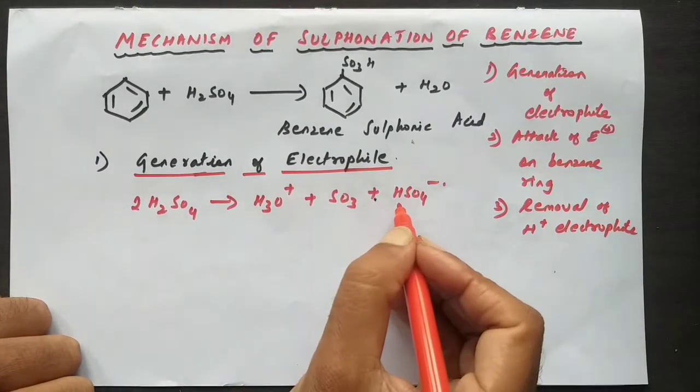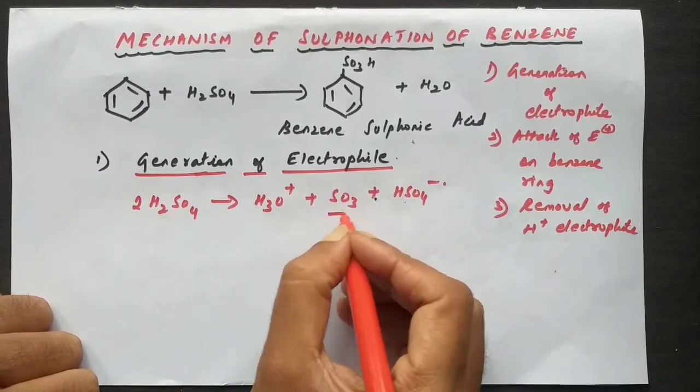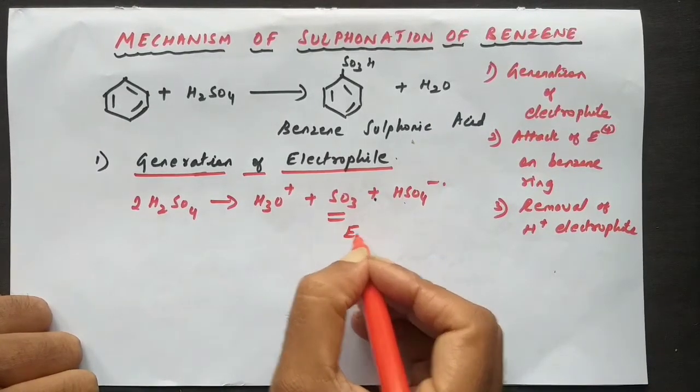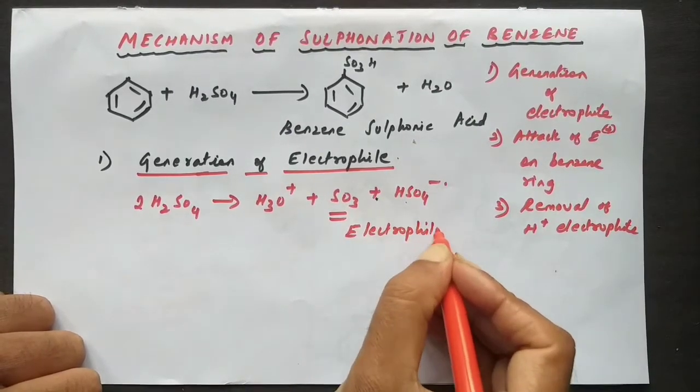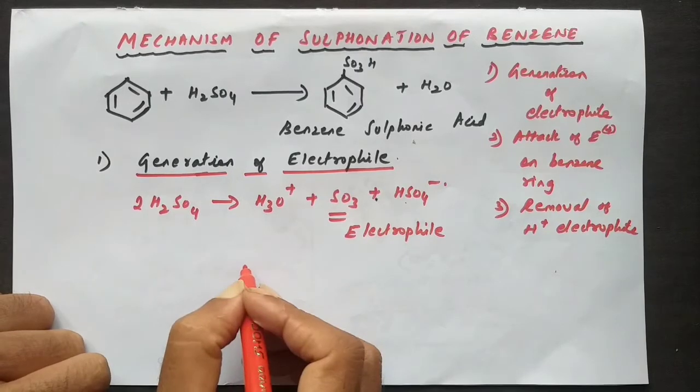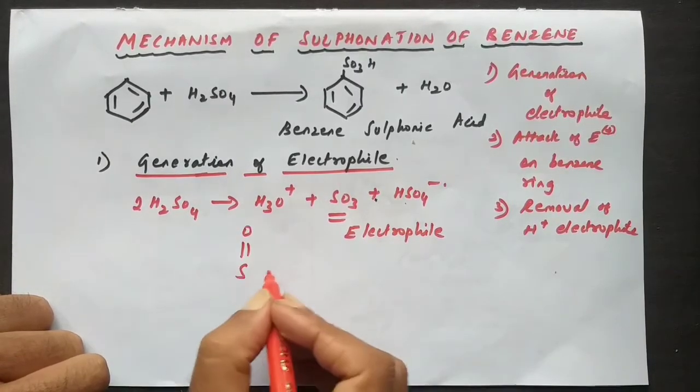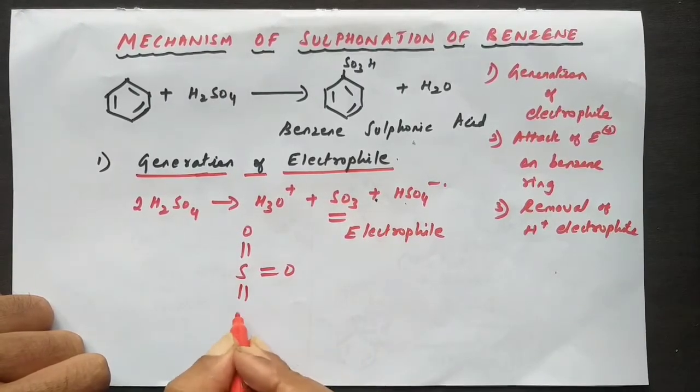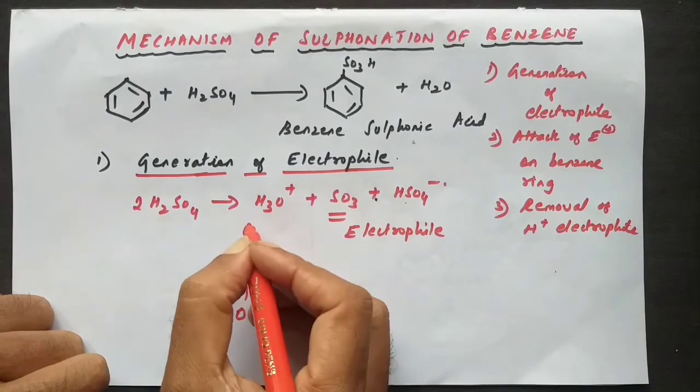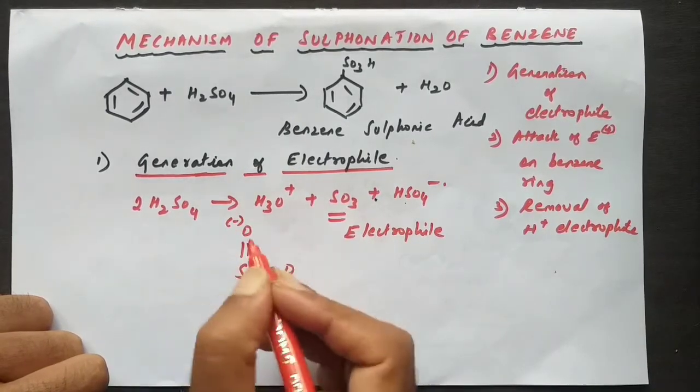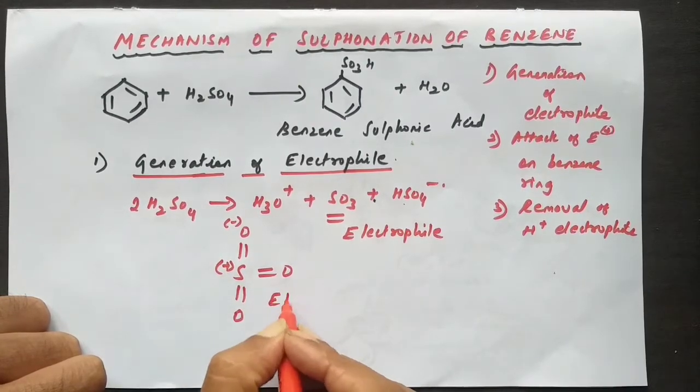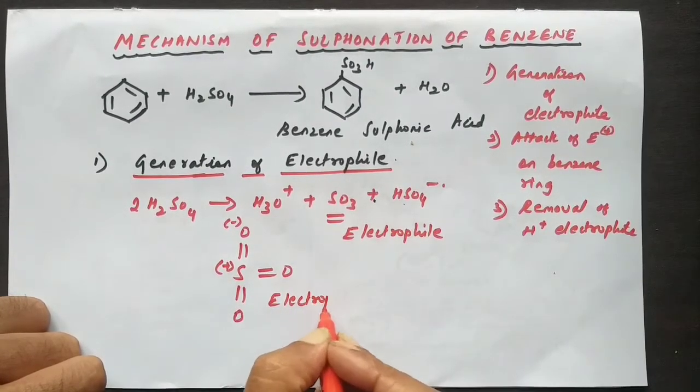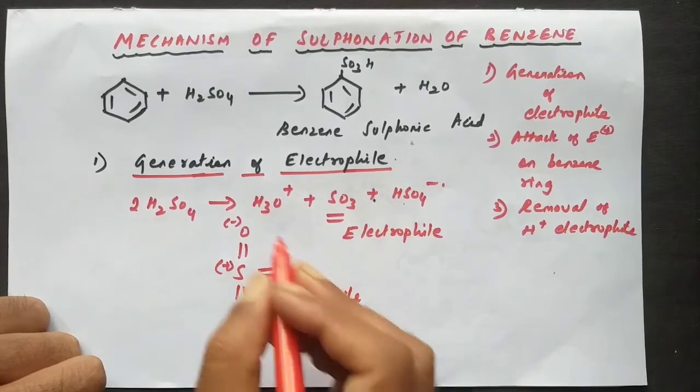So it dissociates into hydronium ion, sulfur trioxide, and HSO4-. Your SO3 will be the electrophile. So how would be the electrophile? S double bond O, double bond O, and double bond O. Oxygen being more electronegative, this will have the negative sign and sulfur will have the positive sign. So in such a way it will be an electrophile. The electrophile generated in this mechanism will be SO3.